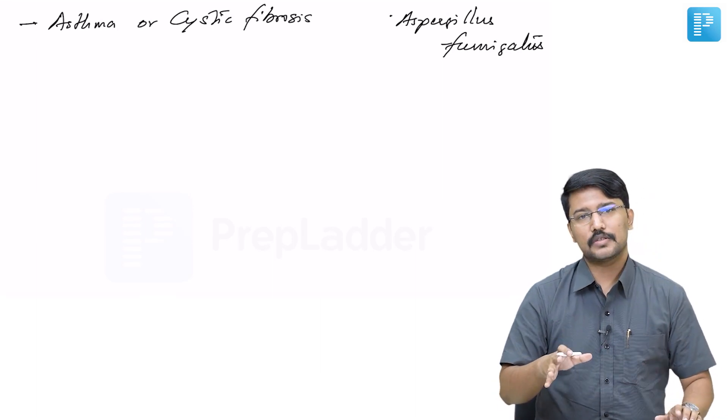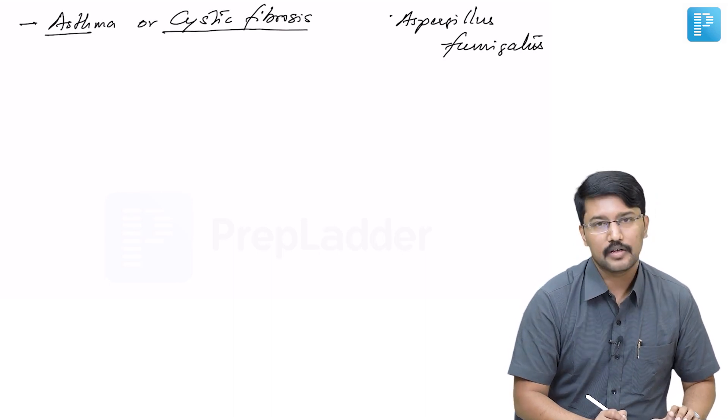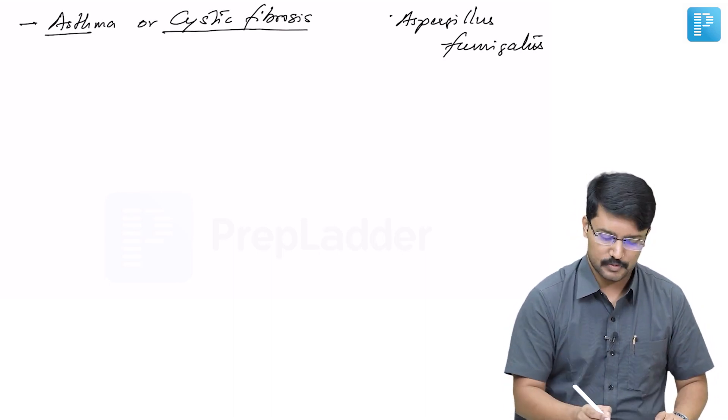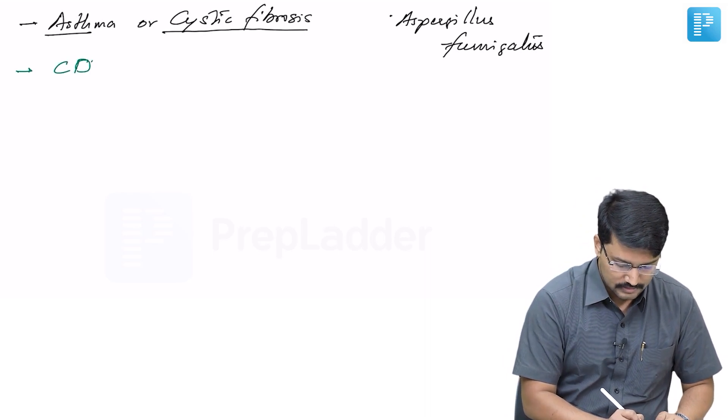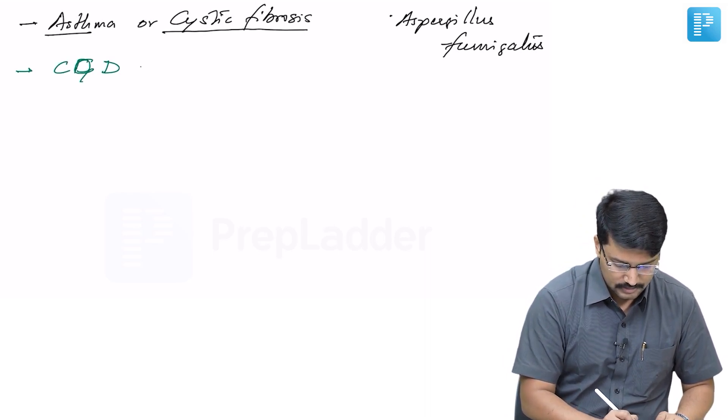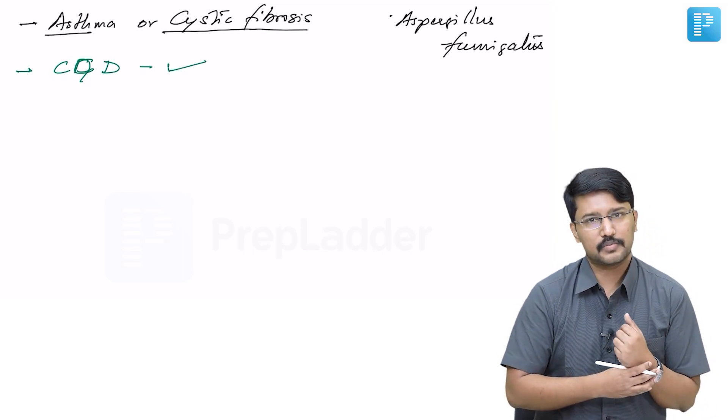This usually occurs only in the backdrop of asthma or cystic fibrosis. One rare entity, chronic granulomatous disease or CGD, may also manifest with allergic bronchopulmonary aspergillosis.